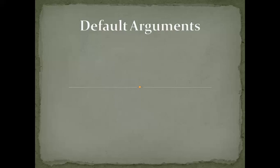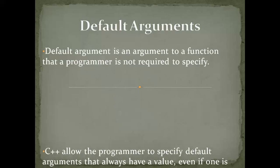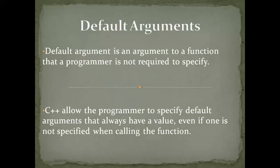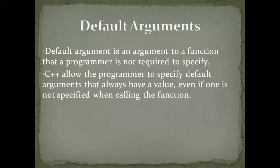Default arguments: A default argument is an argument to a function that a programmer is not required to specify. C++ allows the programmer to specify default arguments that always have a value even if one is not specified when calling the function.